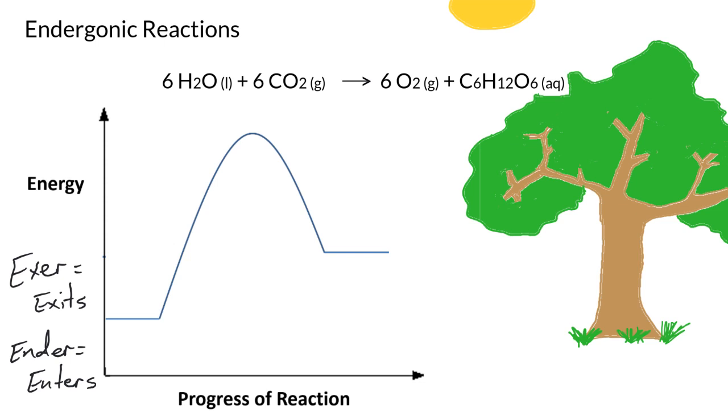In this reaction, just like in our exergonic reactions, we're going to have our reactants on the left side of the energy diagram. Here our reactants are water that the plant gets from its roots and carbon dioxide that it absorbs from the air through its leaves. So we have our reactants here.